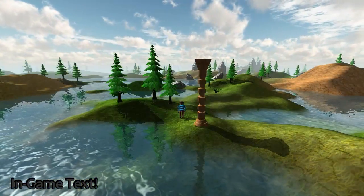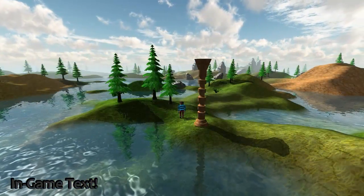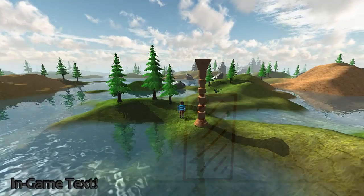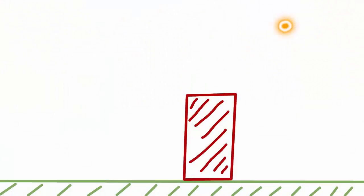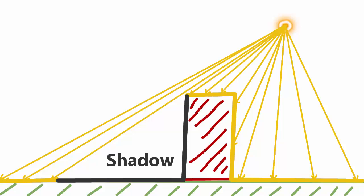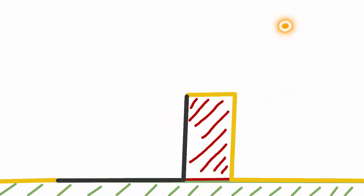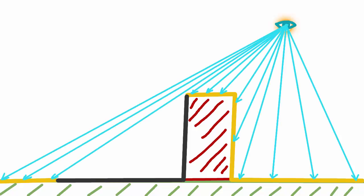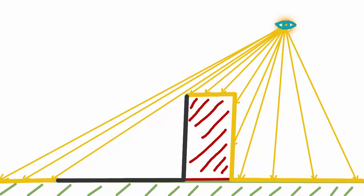What is a shadow? A shadow is obviously the lack of light on a surface which is caused because an object is blocking the light from reaching that surface. If you were able to look at a scene directly from the position of the light source, then everything you could see would be in light, because if you can see it, then the light can see it as well, meaning that there's nothing blocking it from the light.